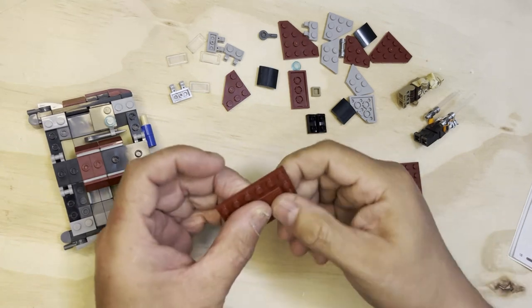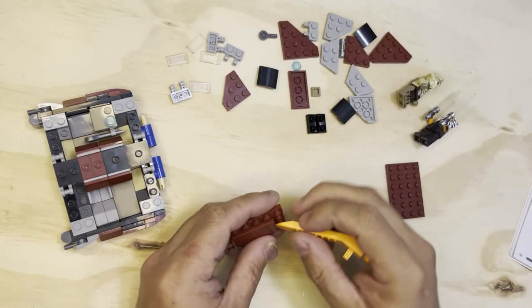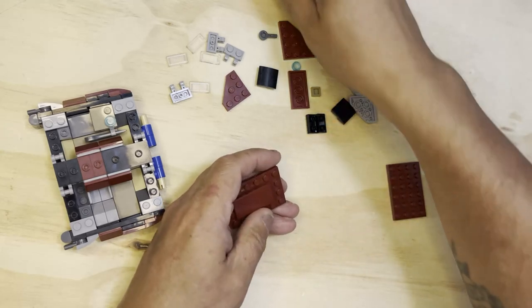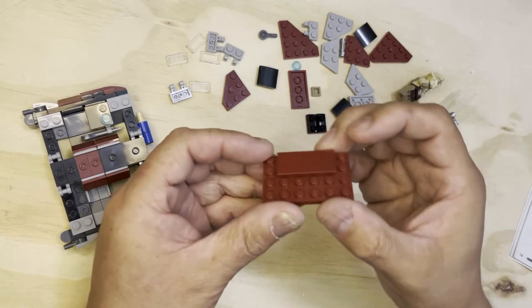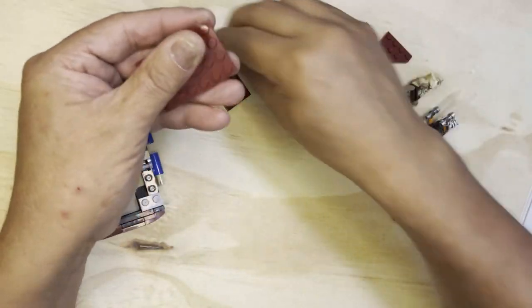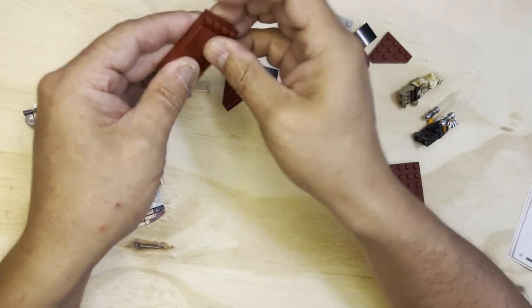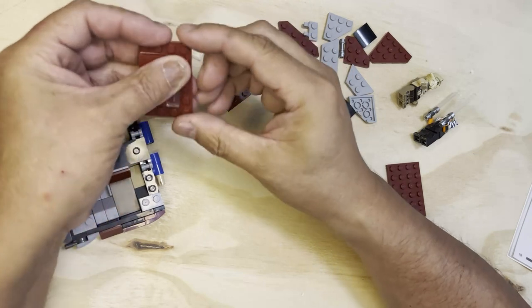So I'm basically going to put this on here. That's what these are for. So this will go like this. All right. And then I need two clear glass 1x2s right here, just like that.